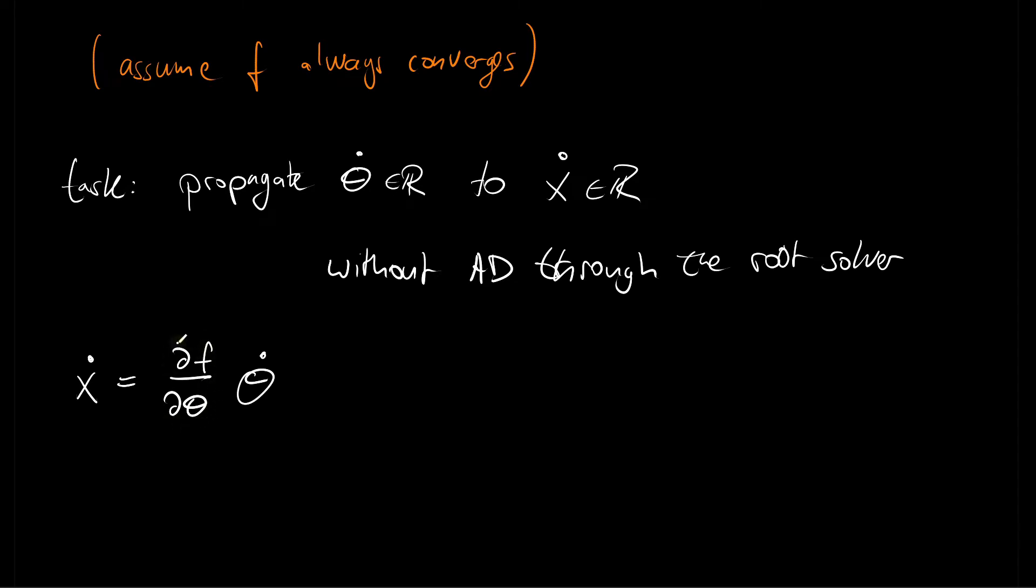That's why it's called a Jacobian vector product. But here in our scalar root finding case, this is just another scalar. So we are kind of like scaling the tangent information from the input to the output. So let me note that down, this df by d theta is another real-valued number.